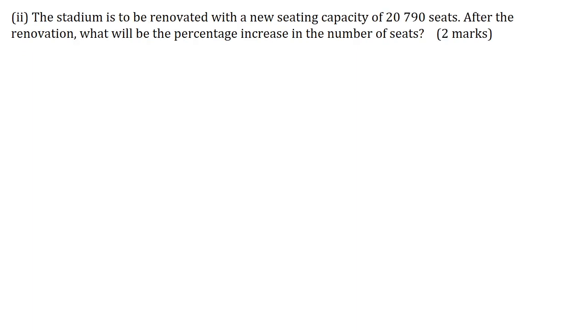Part 2: The stadium is to be renovated with a new seating capacity of 20,790 seats. After the renovation, what will be the percentage increase in the number of seats for two marks? The new capacity here is 20,790. The old capacity is 15,400. And when I subtract it here, I am getting here 5,390 new seats. So your percentage increase is equal to 5390 all over the original amount, 15,400 multiplied here by 100 over 1. And I am getting here 35%.